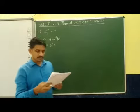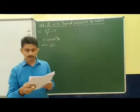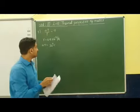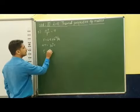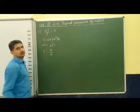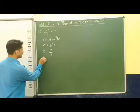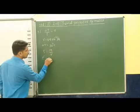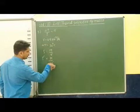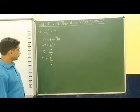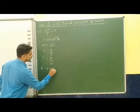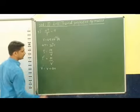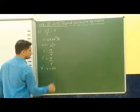So we have to find the fractional change in density. We know that density is considered as mass divided by volume. So rho is equal to mass upon volume.